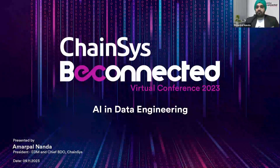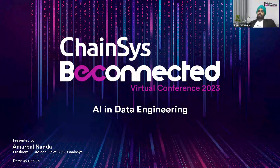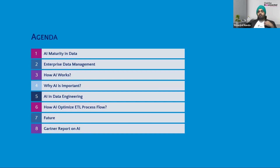So AI and data engineering — for me, it's a very interesting topic because as data engineering was evolving, AI at the same time got introduced and has played a key role, and is still playing a key role in data engineering. I wanted to share the agenda for today. I'm going to start with showcasing how AI matured in data. It will show you some timelines, how AI evolved through the entire value chain of data from extraction to consumption. Following that, I'd like to give you a high-level overview about enterprise data management and how it looks.